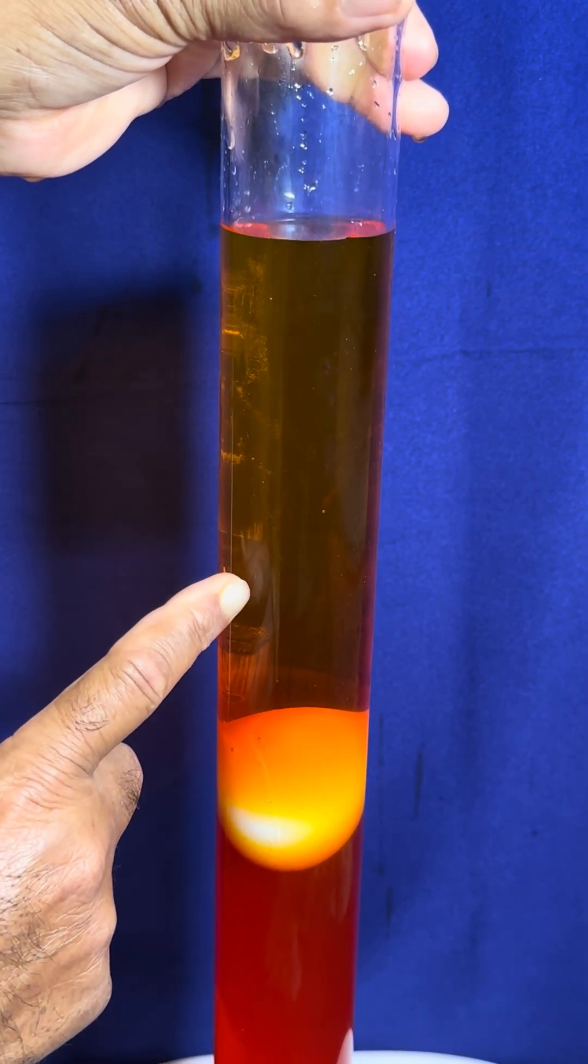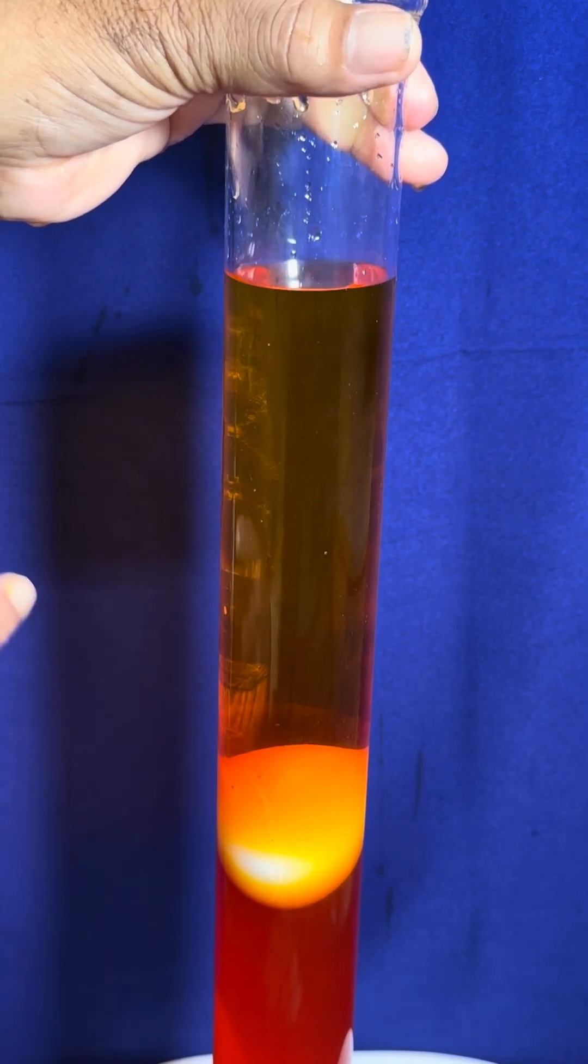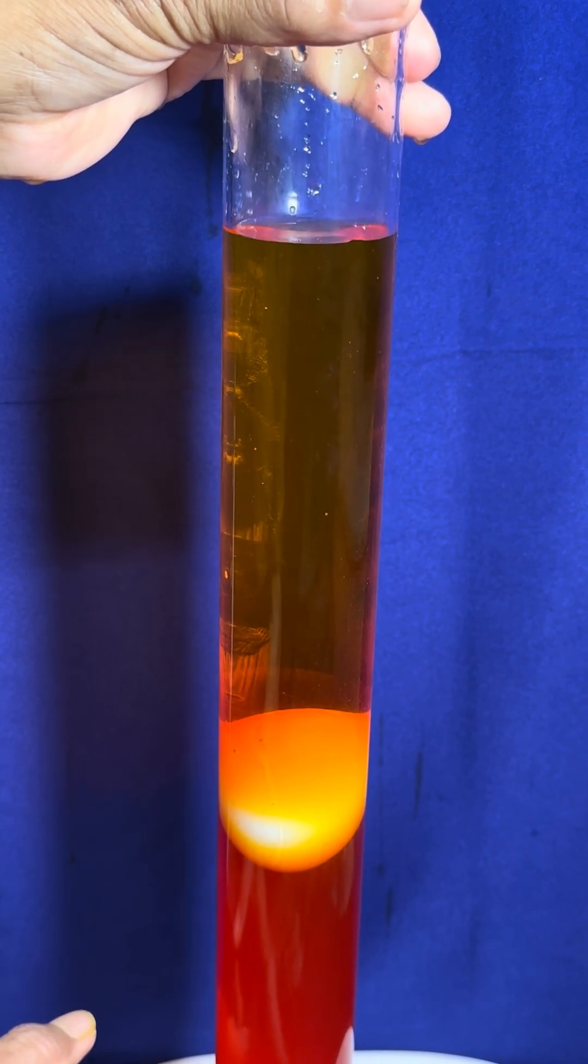The upper liquid is normal water with a relative density of one, and the lower liquid is salt water with a density greater than one.